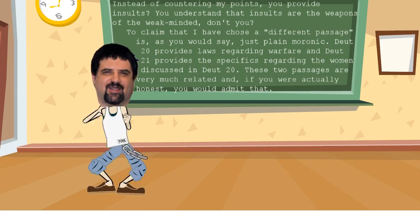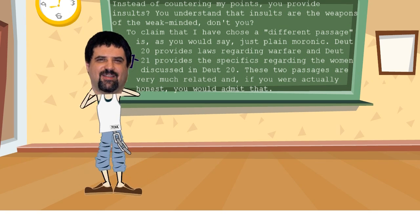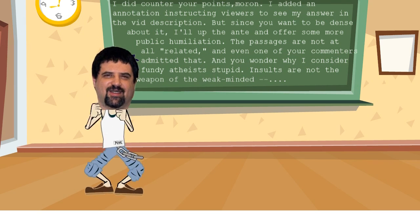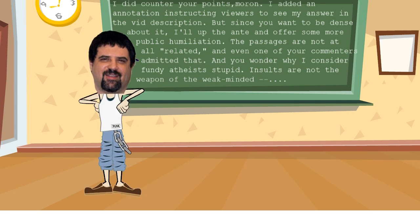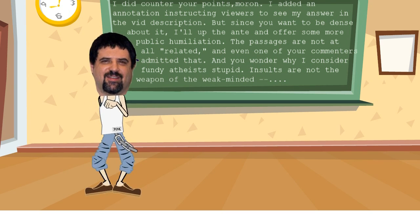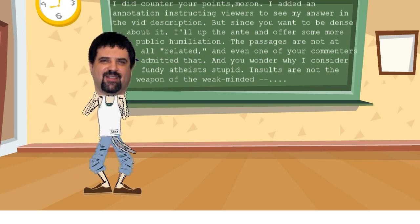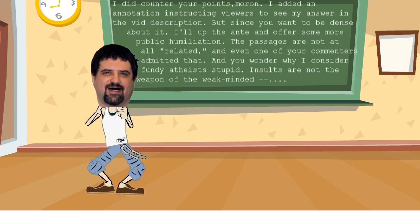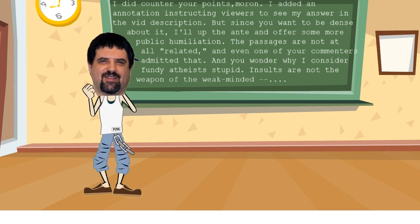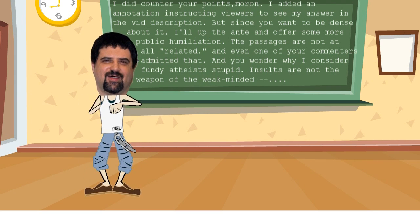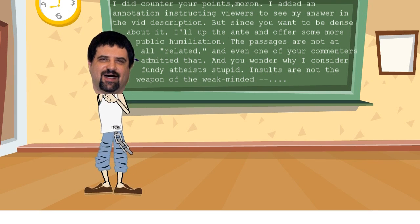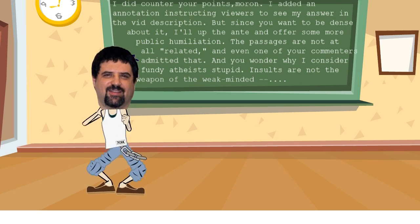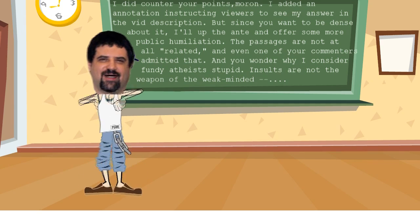This made me madder than a one-legged waitress working in IHOP. So I decided to write him back and show him. I told him that I did counter his points, but I was now going to humiliate him publicly. I assured him that the passages weren't related and even called him a fundy atheist. Finally, I set the record straight by saying that insults are not the weapon of the weak-minded. That's the rule the truly weak-minded like you made up to feel better about yourselves for being ignorant and deserving that label. I told him to stop writing and wasting my time.